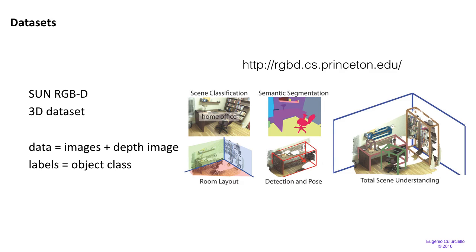Similarly, there are also 3D datasets like the SunRGBD dataset, which was built with a camera and a Kinect depth camera. The data consists of images plus depth images, and the labels are object classes with pixel-wise segmentation as well. This is a very rich dataset.